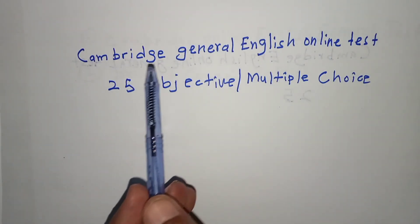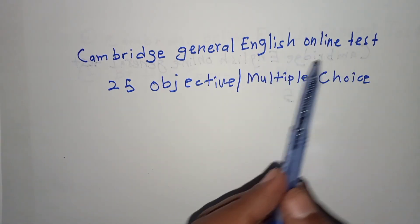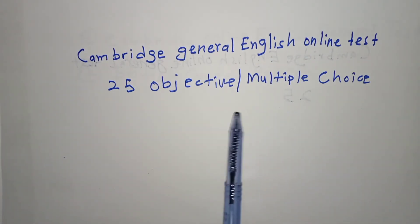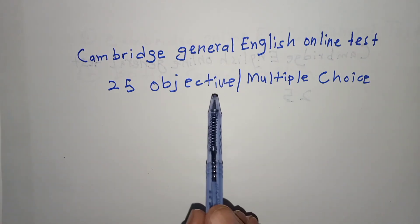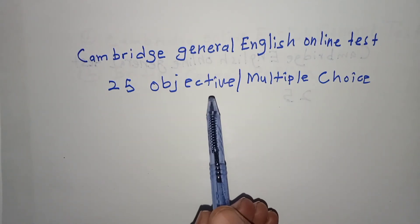By writing in Google Cambridge general English online test, there are 25 objective or multiple choice questions. You can take that and it just takes 10 to 15 minutes. Don't worry about this, it is simple and easy.